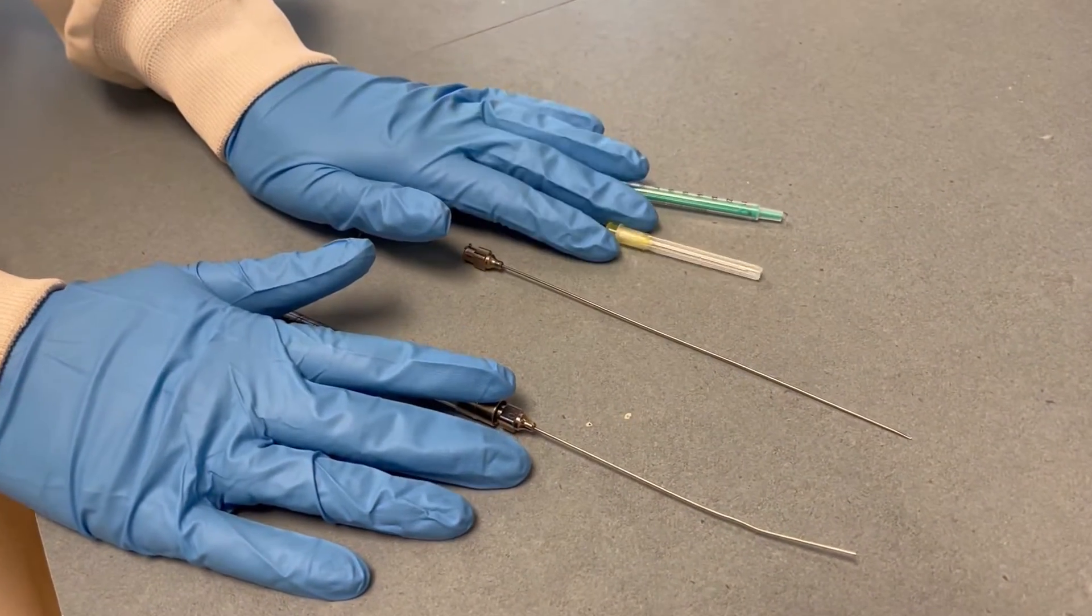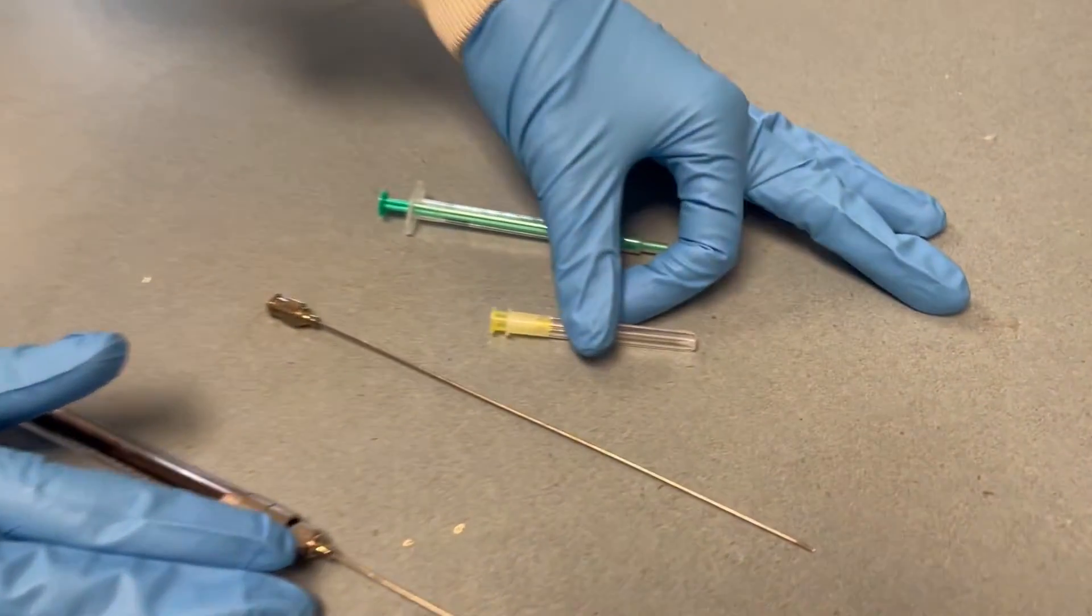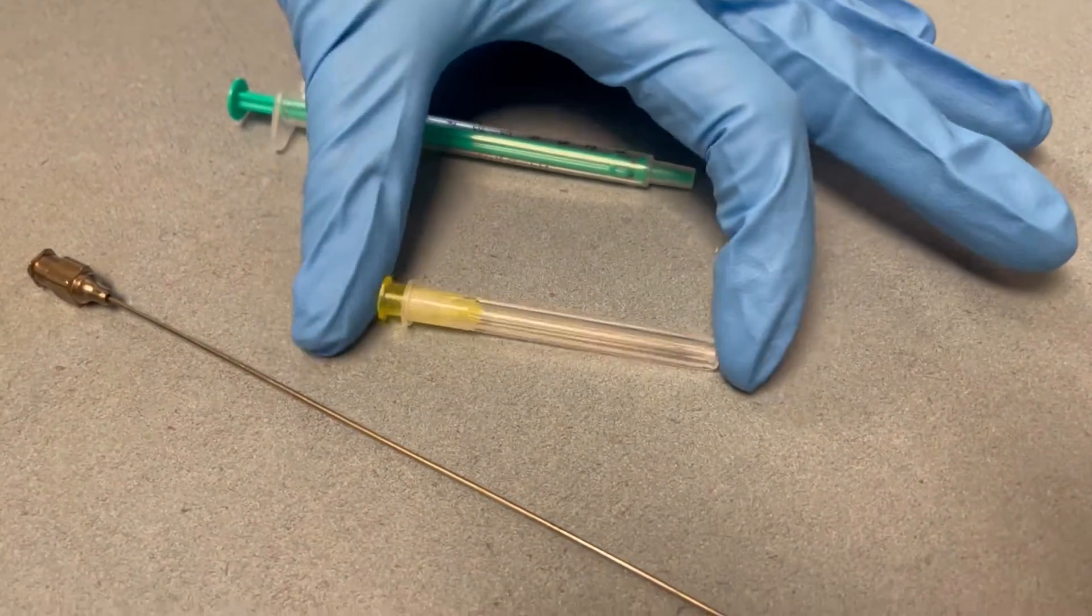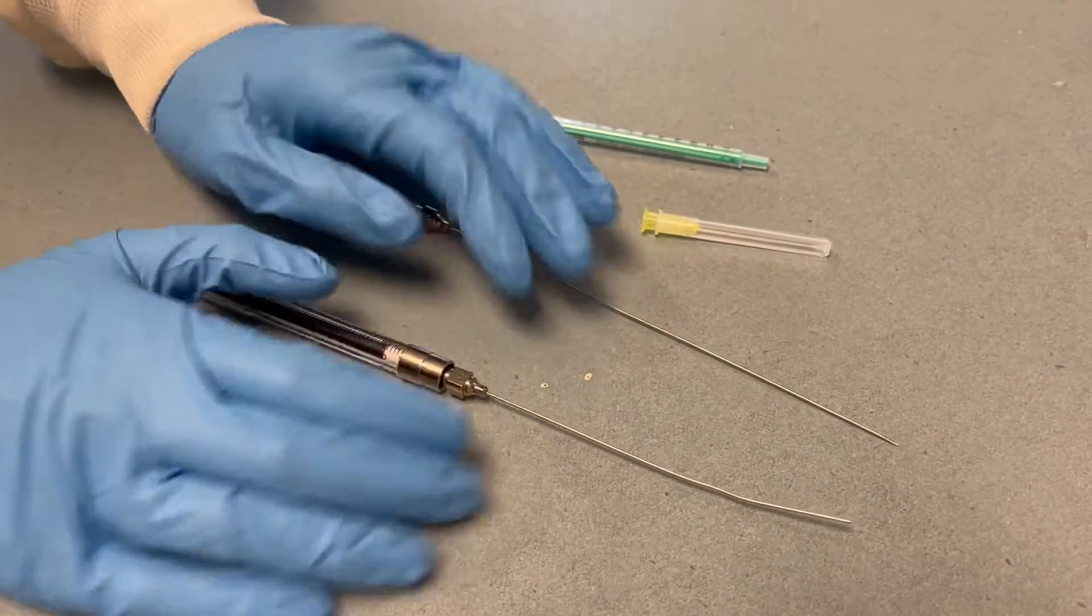Disposable needles are convenient since they're always clean and sharp, but since they're polypropylene they can't be heated in the oven and we can't ensure that they're always moisture free. So we have stainless steel needles that can go in the oven.